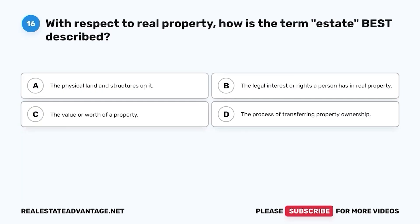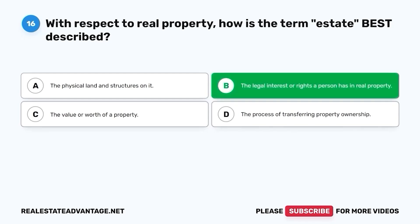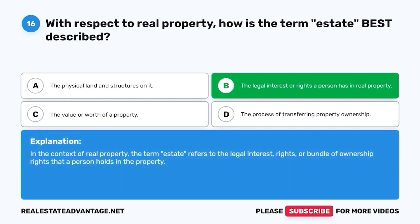Question 16. With respect to real property, how is the term estate best described? A. The physical land and structures on it. B. The legal interest or rights a person has in real property. C. The value or worth of a property. D. The process of transferring property ownership. The correct answer is B. The legal interest or rights a person has in real property. In the context of real property, the term estate refers to the legal interest, rights, or bundle of ownership rights that a person holds in the property.